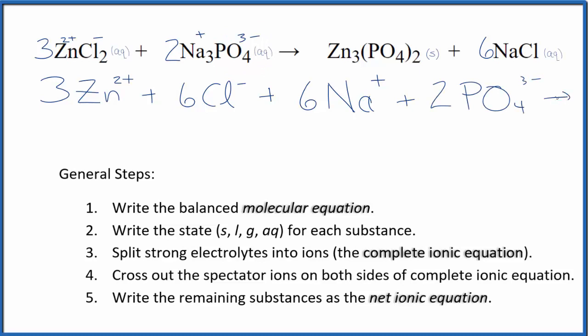These are the reactants in our net ionic equation. For the products, when we have a solid like this zinc phosphate, which is our precipitate, we don't split those apart. So we're just going to keep that together.